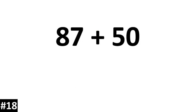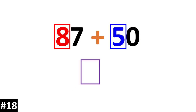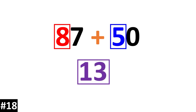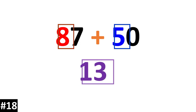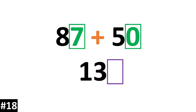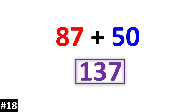87 plus 50. First we add the tens: 8 plus 5 is equal to 13 tens. We add the ones: 7. The answer is 137.